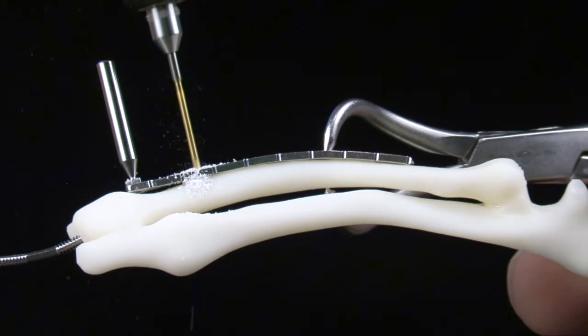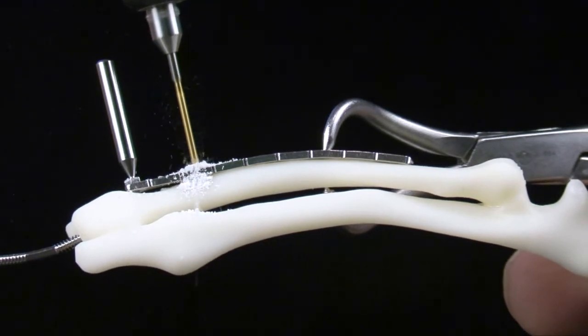Place 2 to 3 additional screws, verifying accurate anatomic reduction is maintained after each screw is inserted.